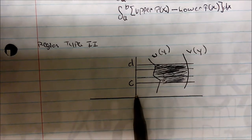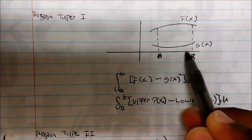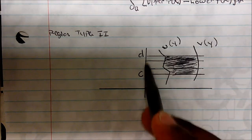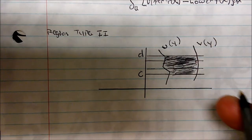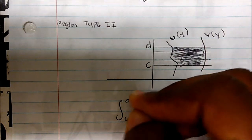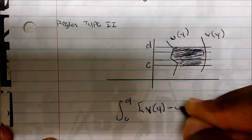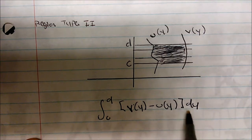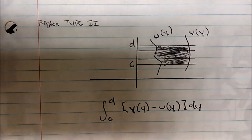Now Type 2 is the same idea, but the only difference is that we're integrating along the y-axis. In Type 1 we walk along the x-axis identifying top and bottom functions. Here, we walk along the y-axis — so v(y) would be the top function and u(y) would be the bottom. The integral is given from c to d of v(y) minus u(y) dy. Be careful: when integrating along y, attach dy, not dx — your differential should match what you're integrating with respect to.